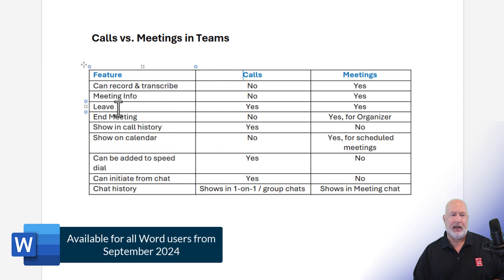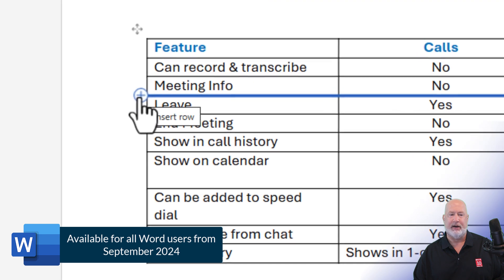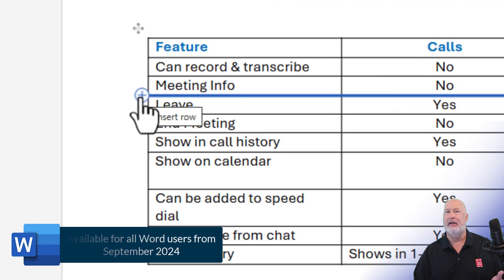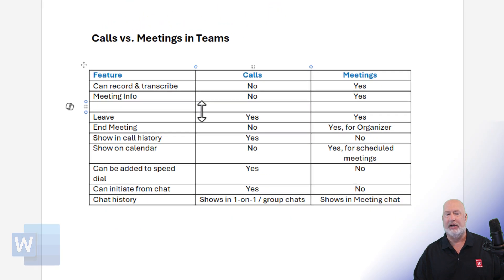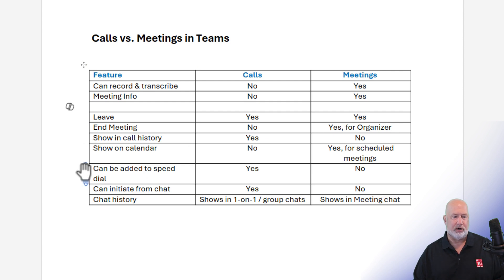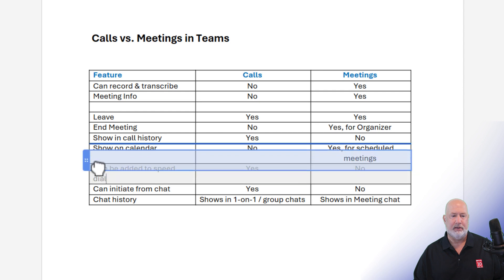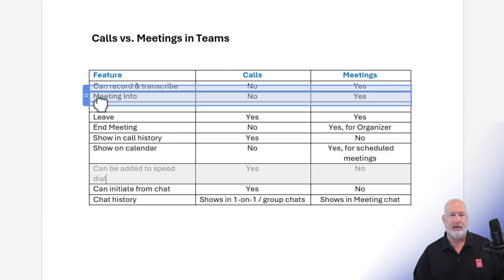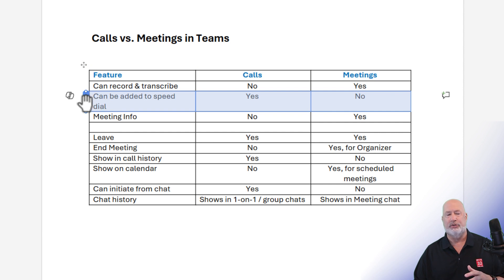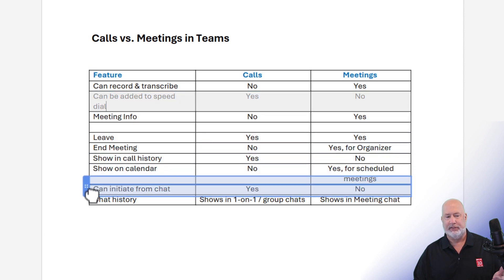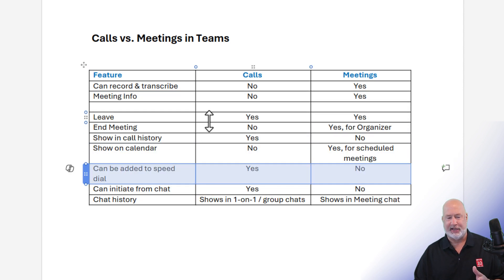Another great feature — how about doing rows? If I come over here, I have a plus sign between meeting info and leave. Click, I've got a new blank row. Can I move columns? Can I move rows? Sure. I'm gonna click, drag, and again the blue line shows me exactly where it will drop this. This is really great stuff if you ask me.